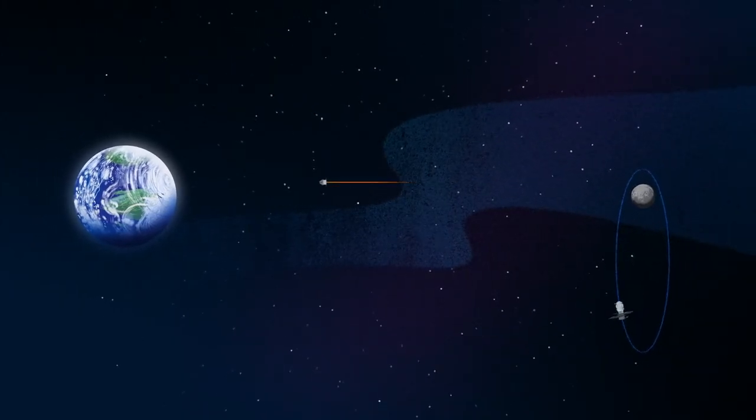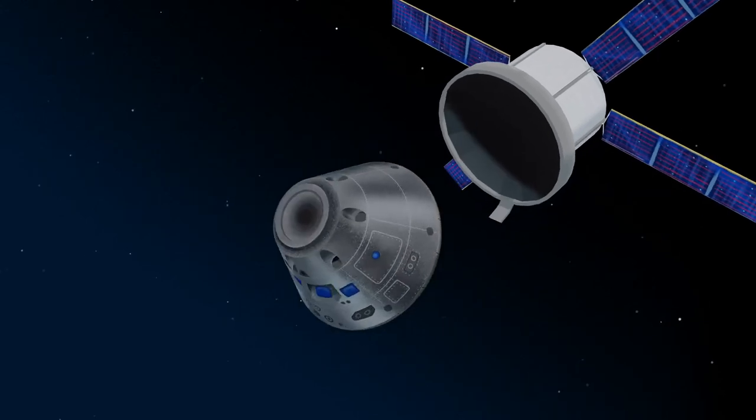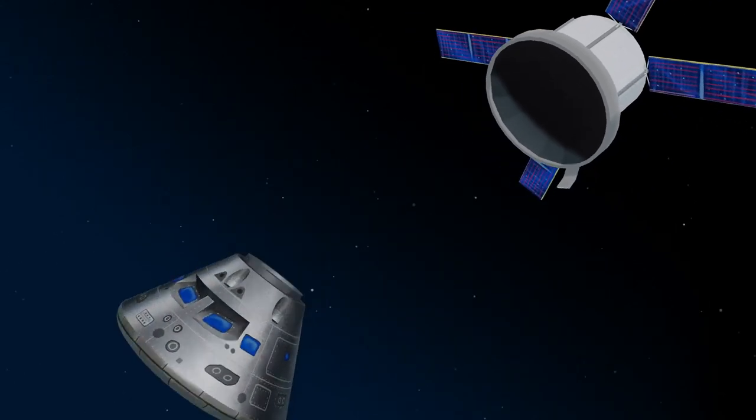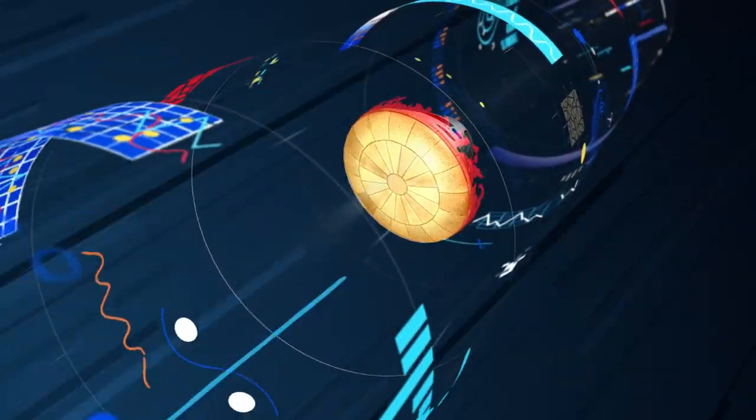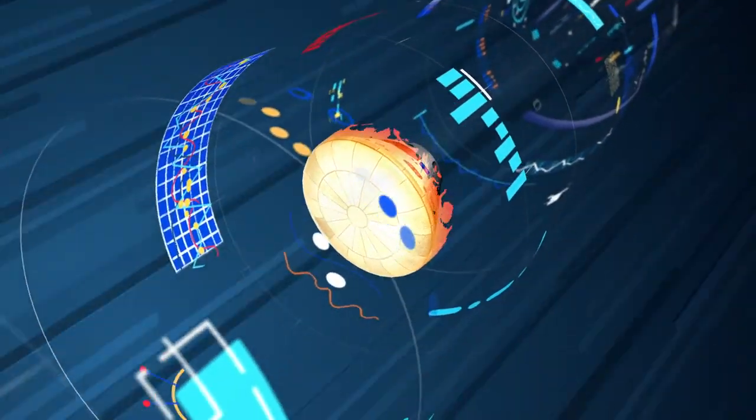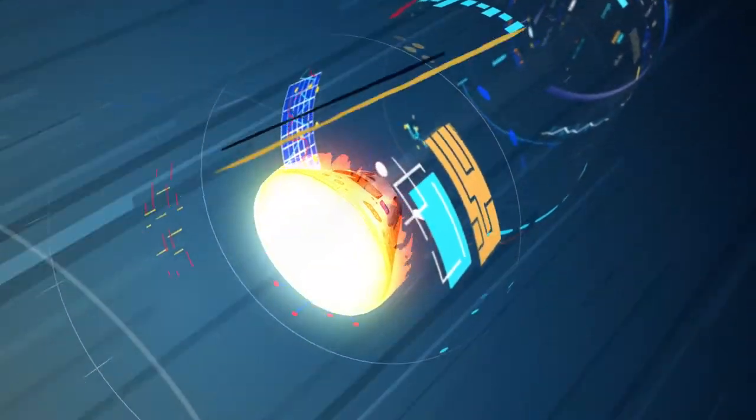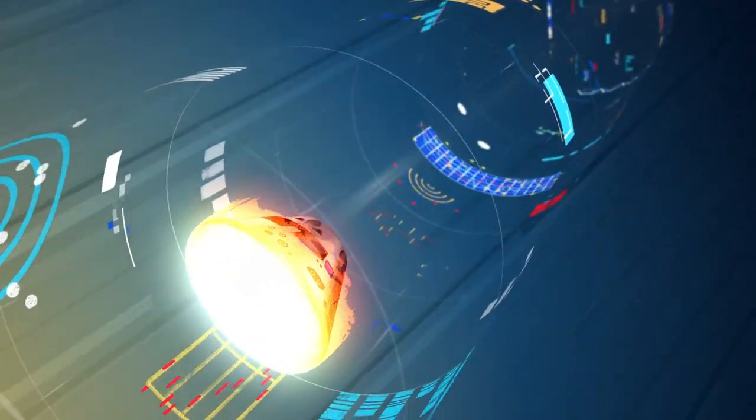As they near the end of this journey, the service module is released, and the crew module is oriented heat shield first. Entering Earth's atmosphere at 25,000 miles per hour, the friction of air slows Orion considerably, while also subjecting it to temperatures of 5,000 degrees.